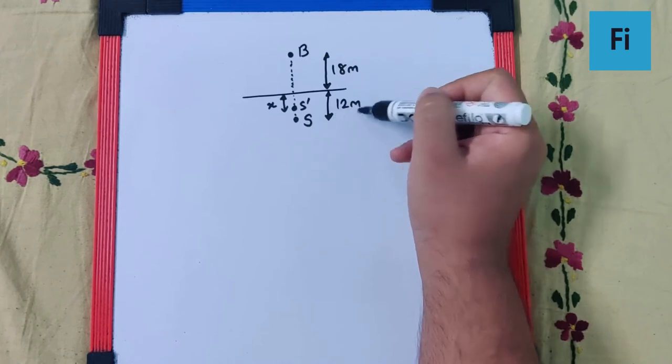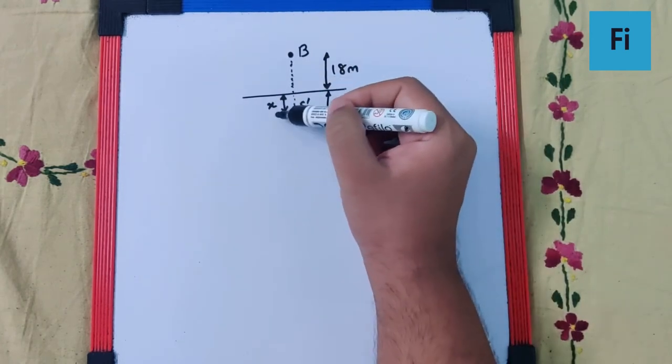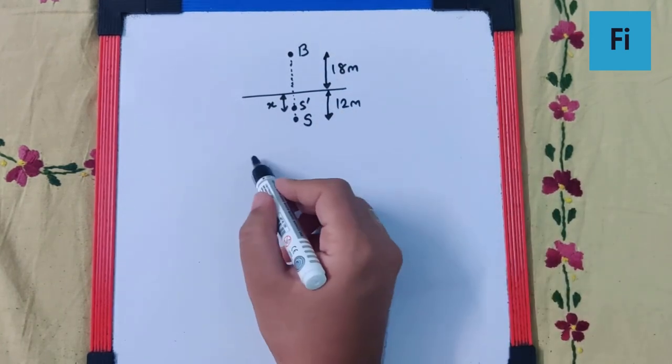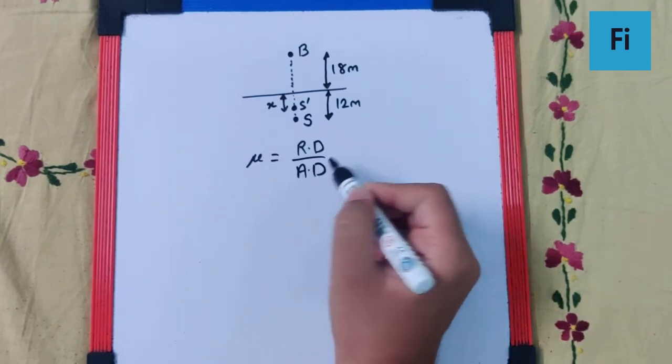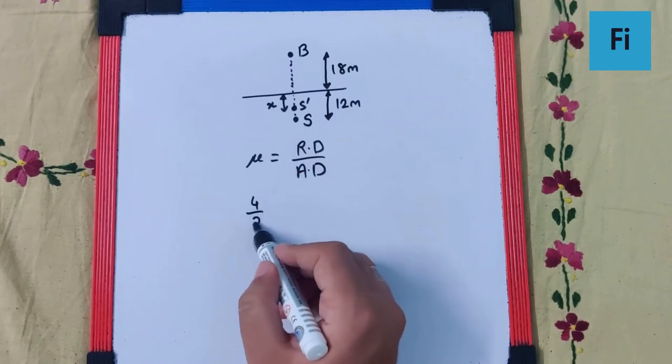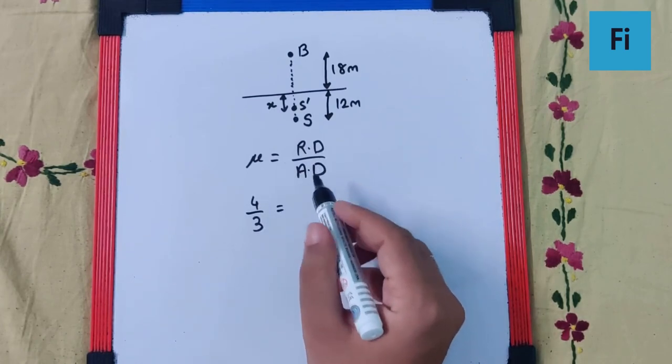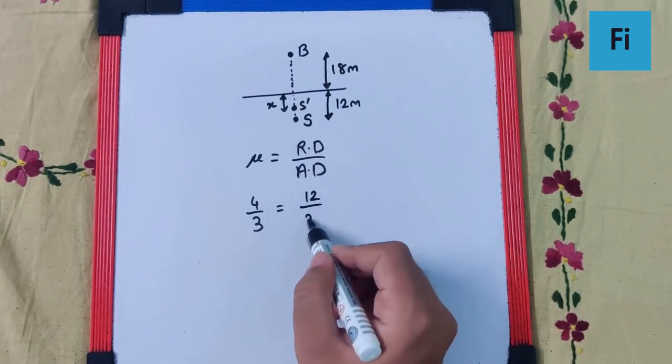We can say that 12 meters is the real depth and X, which we want to find, is the apparent depth. We know by Snell's law, μ is equal to real depth upon apparent depth. μ is given as 4/3, real depth is 12, apparent depth is X. Calculating this will give us 9 meters as our final answer.